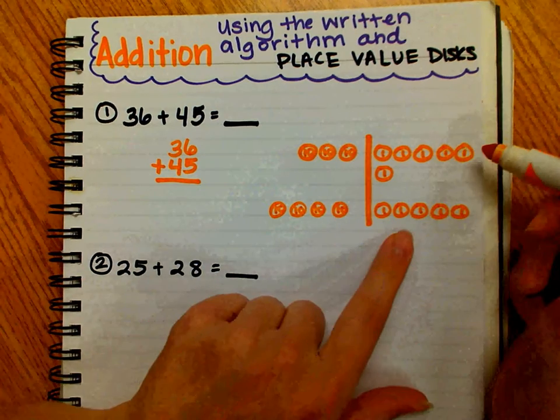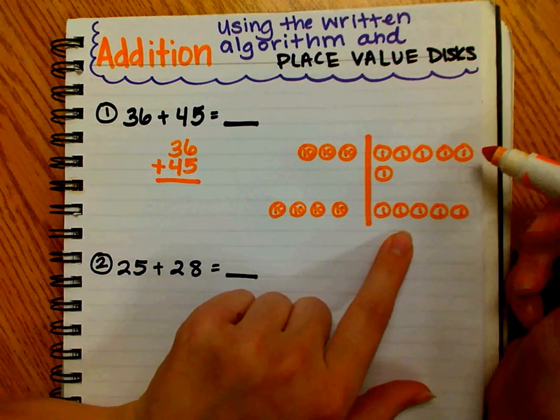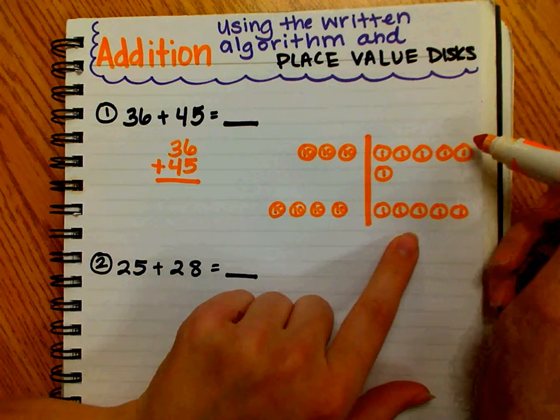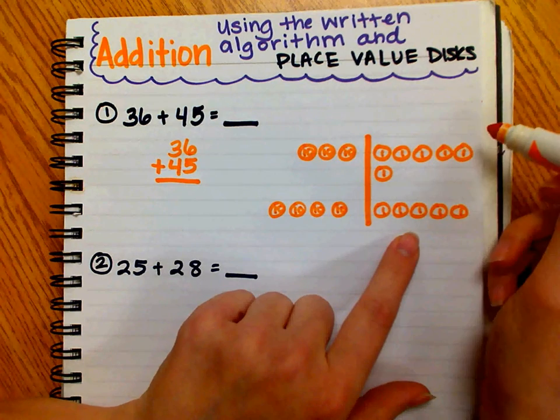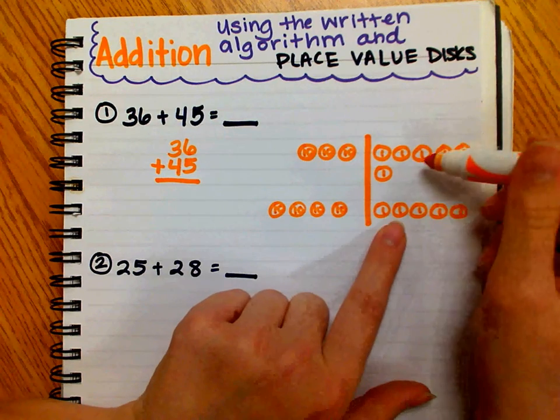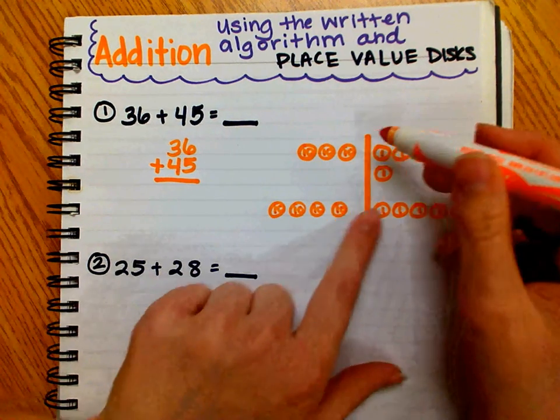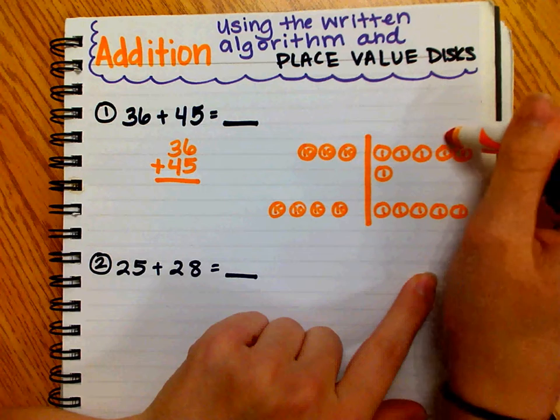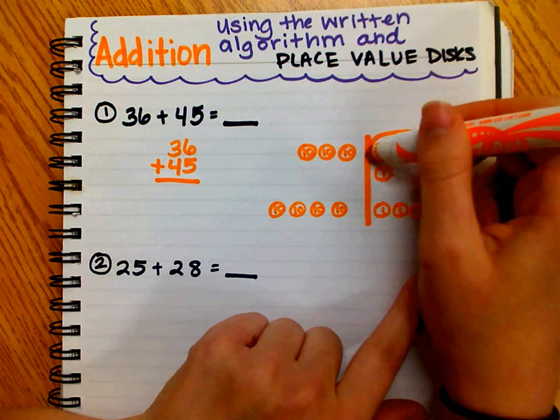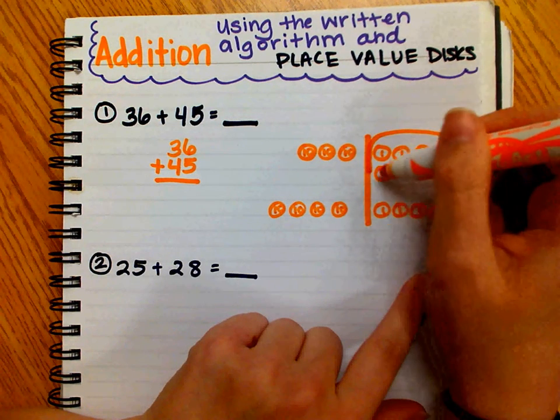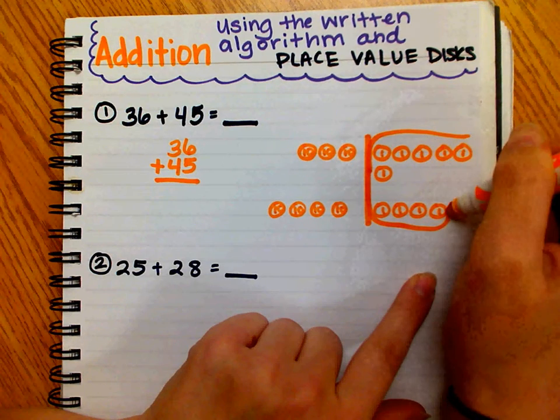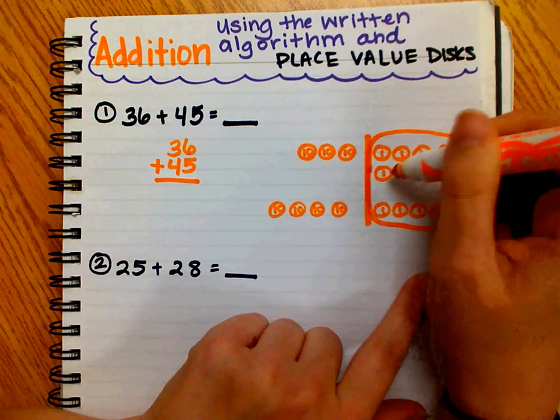Now I start by adding the ones together. I know that I have at least ten ones, and when I have ten ones, I can bundle or exchange for one ten. I'm going to circle my ten ones. I have six here, and if I add four more, that will make ten.